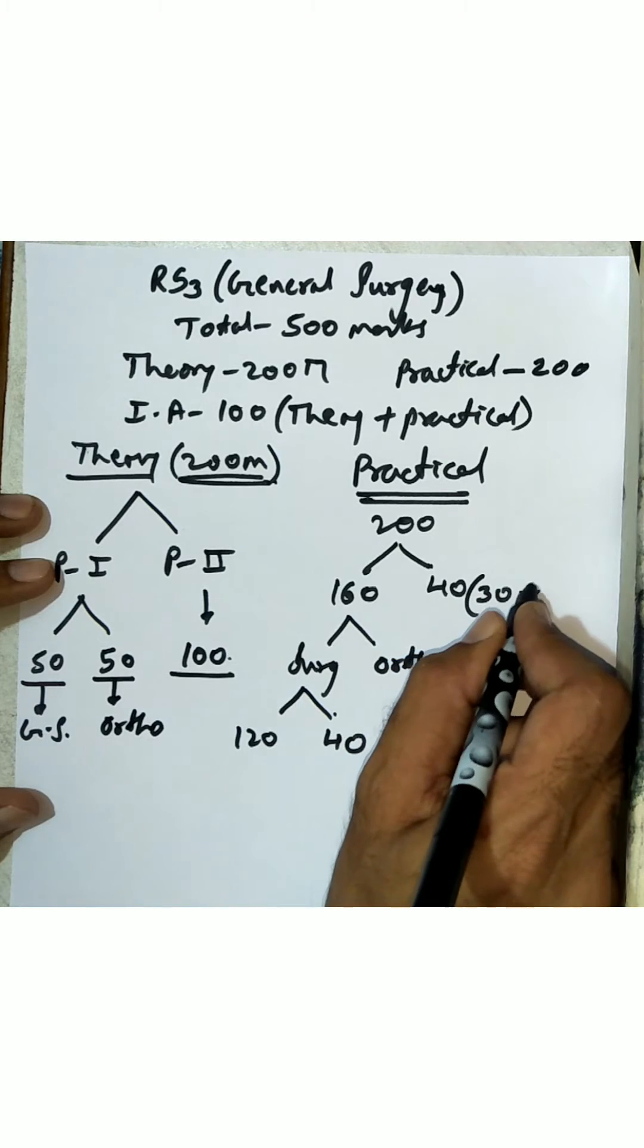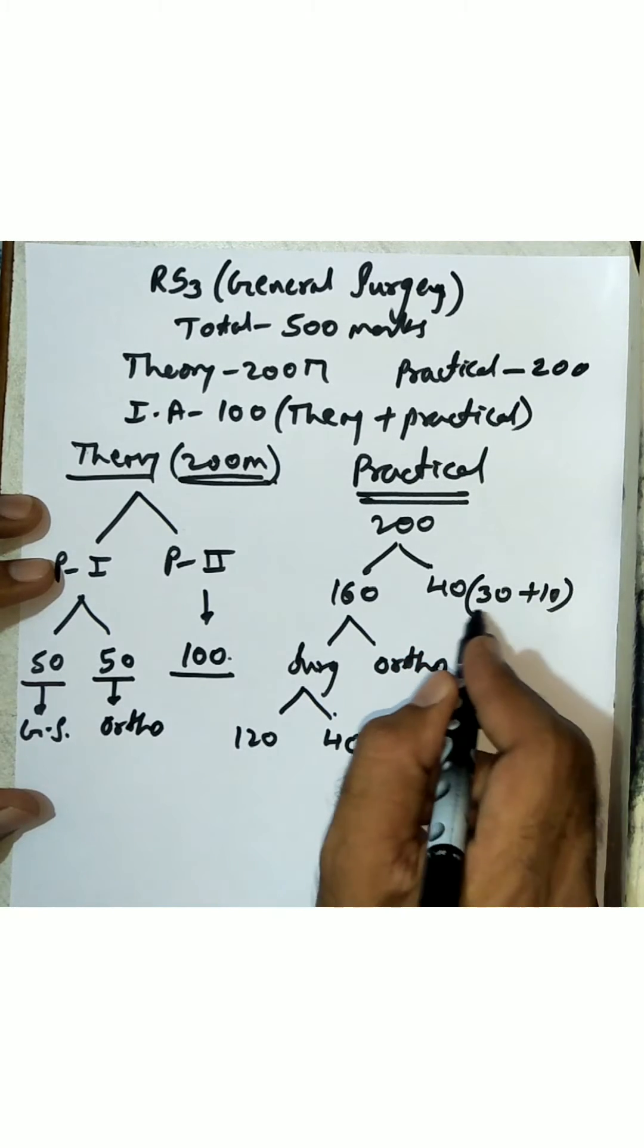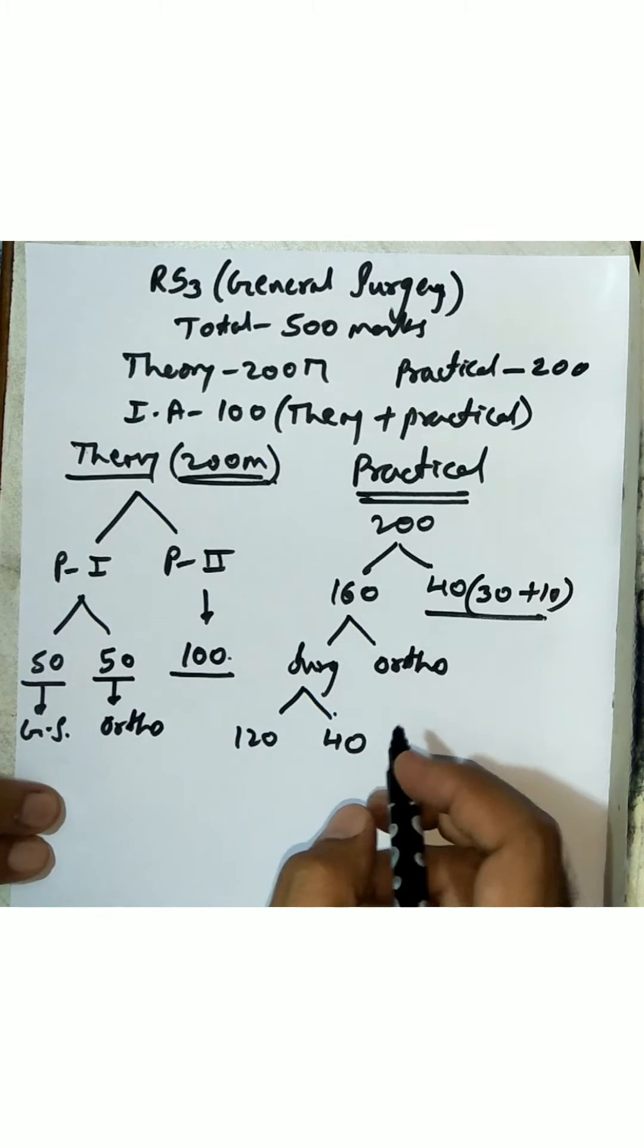30 marks in general surgery and 10 marks in orthopedics. So 30 marks viva in surgery and 10 marks viva in orthopedics.